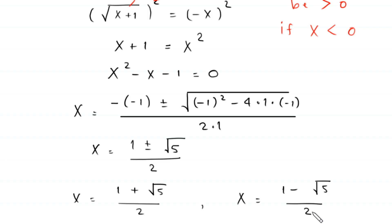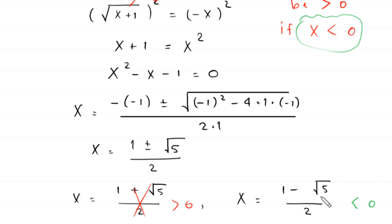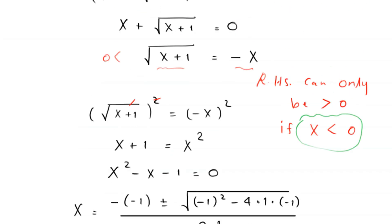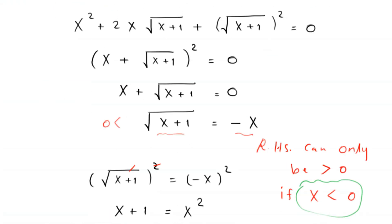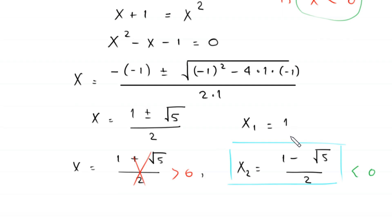Now, as we discussed earlier, x must be less than 0. The value (1 plus root 5) over 2 is greater than 0, so it is rejected. The value (1 minus root 5) over 2 is less than 0, so this is the second solution of this equation. First we found that x equals 1, and then x equals (1 minus root 5) over 2. So we have two solutions for this equation.